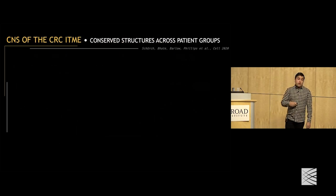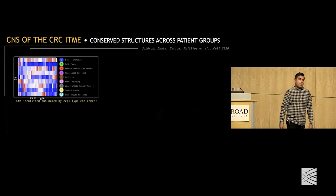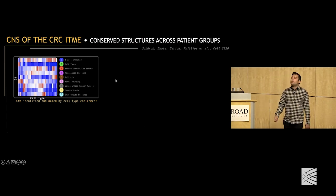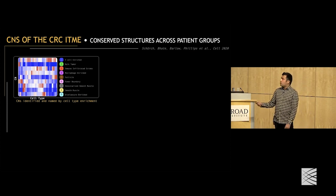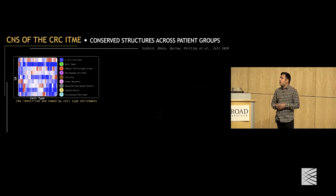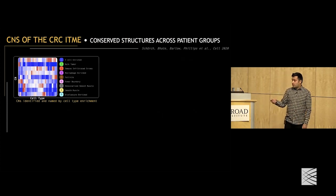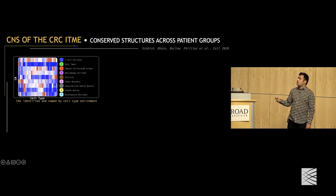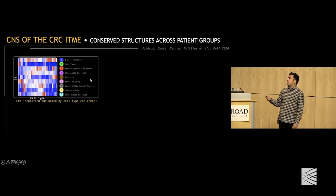We ran our algorithm to identify CNs and ended up with the CNs and the cell types used to identify them. Having such a simple algorithm enables us to actually name and interpret what these regions are. We named them — this one is T-cell enriched, this one is granulocyte enriched, and so on.